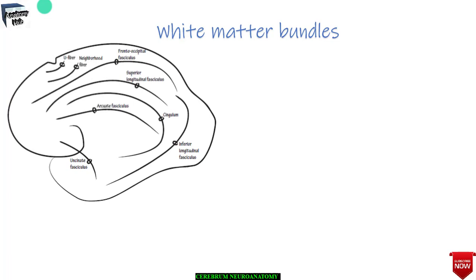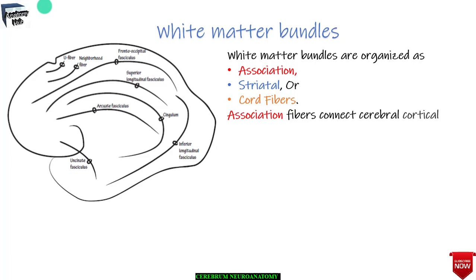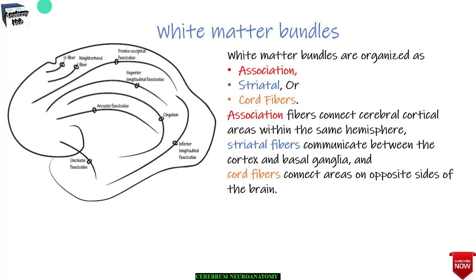The cerebral white matter is a compact mass of a vast number of nerve fibers associated with neuroglia — the supporting cells, like connective tissue, inside the central nervous system. These white matter fibers lie deep to the cerebral cortex and form the large volume of each cerebral hemisphere.